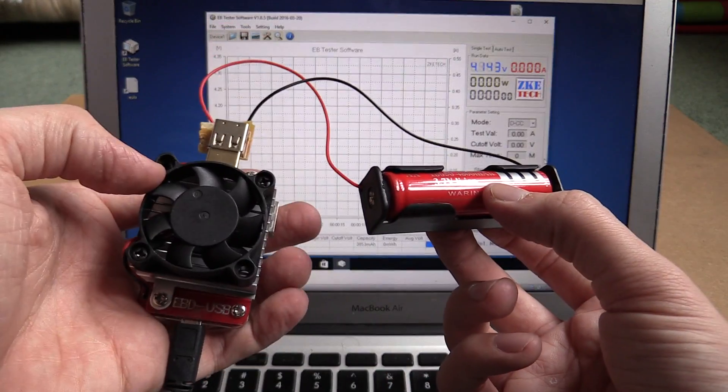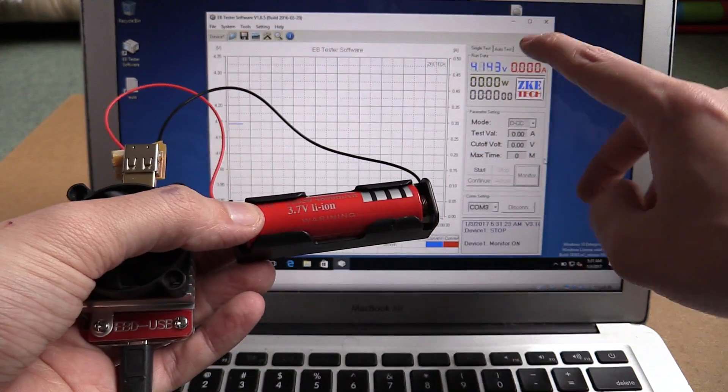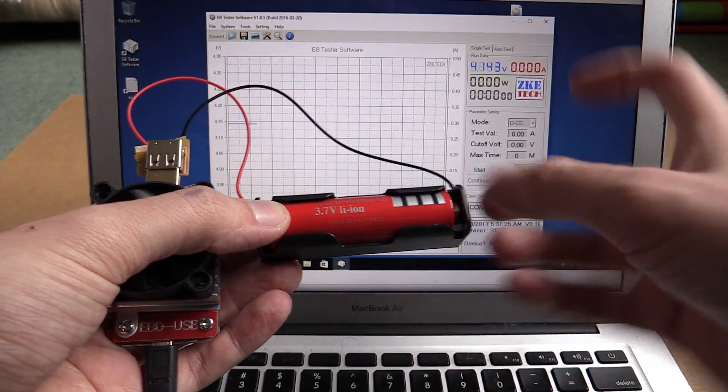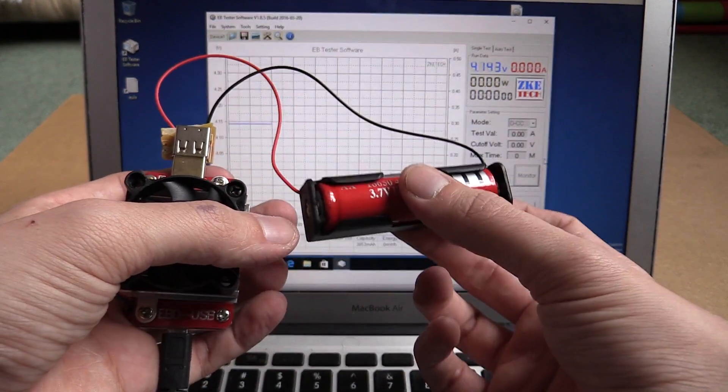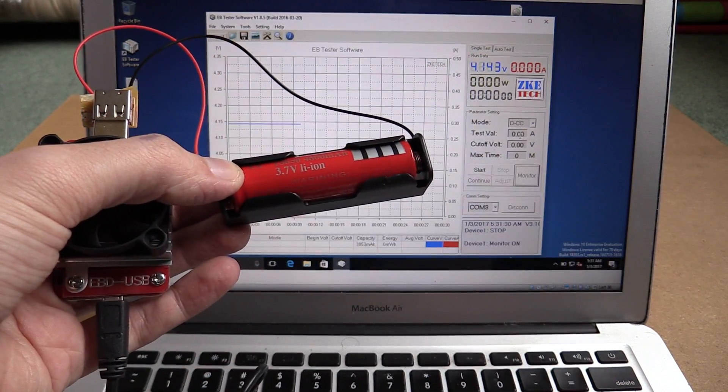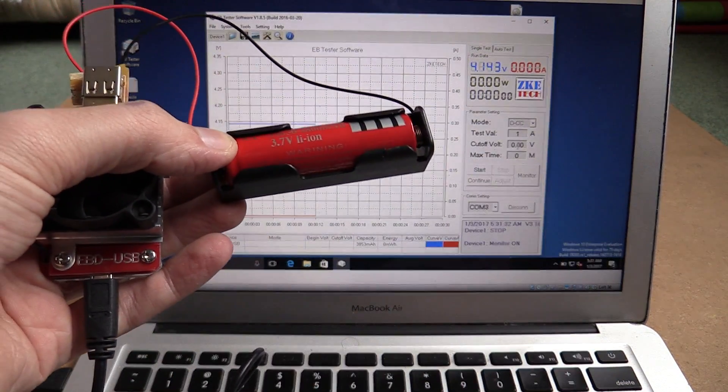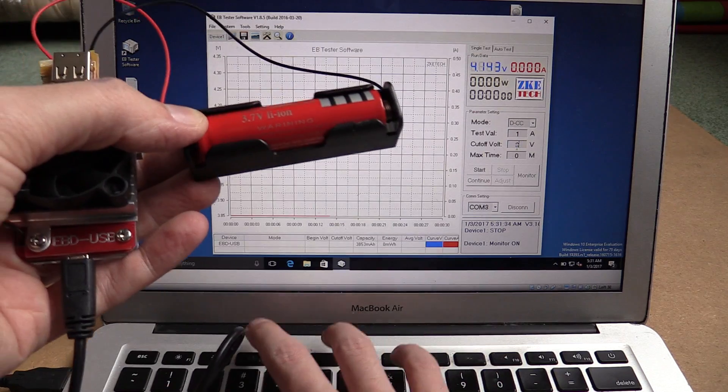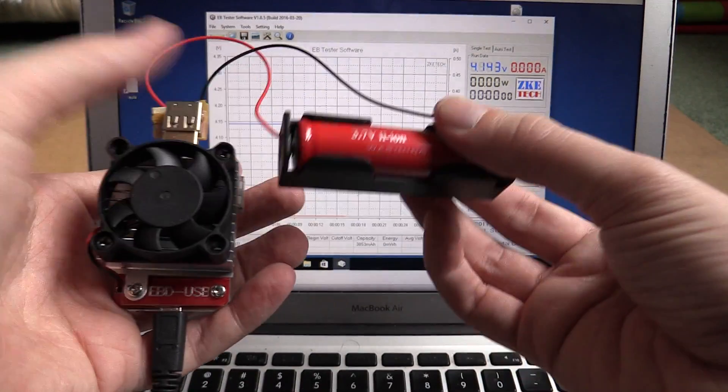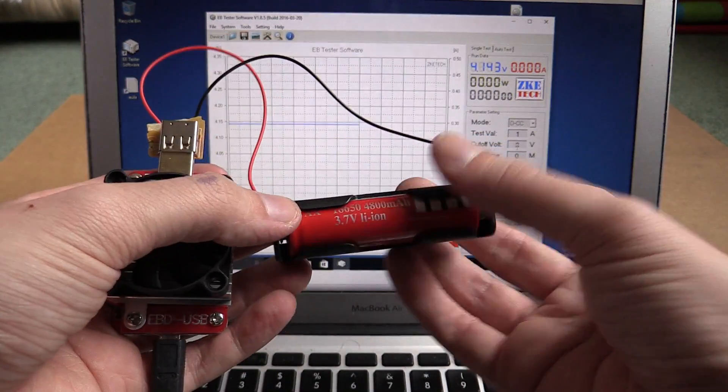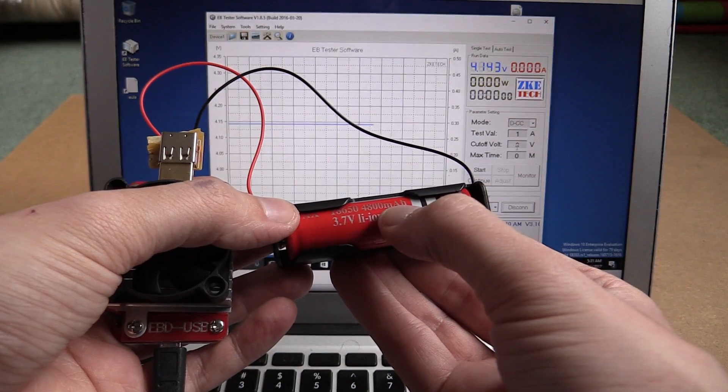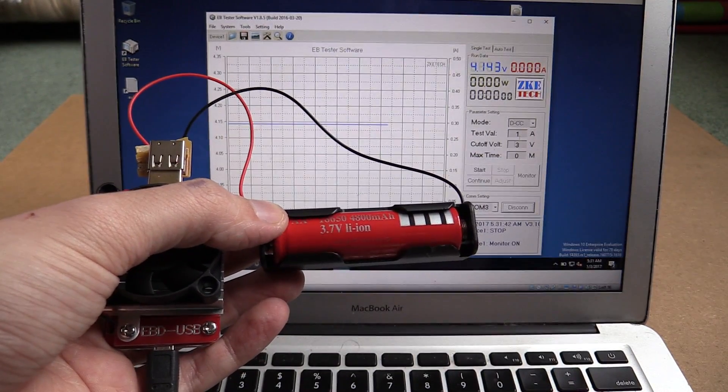So I've connected the battery to an electronic load, and it's currently measuring 4.14 volts. So it has dropped a little bit from the 4.2 volts that I originally charged it to. What we're going to do is discharge the battery at a rate of 1 amp with a cutoff voltage of 3 volts, and then measure how much power we've managed to consume from this battery. I'm pretty excited because it is rated at 4,800 mAh. So let's begin the test.